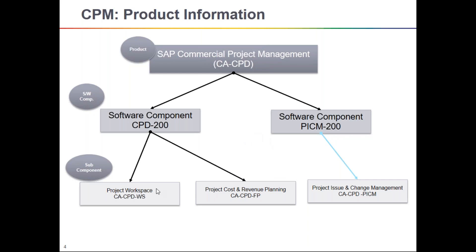Here we can have combinations of subcomponents. The major function of Project Workspace is to create a master project. Master project creation comes under the workspace, and if you want to do cost and revenue planning along with it, you need to use two subcomponents. If you also want to capture issues and change requests, that subcomponent also needs to be installed. This is the basis team's job. In S/4HANA, CPM will always be as an add-on in your system, whereas in older versions, you had the choice to keep it on a separate server.